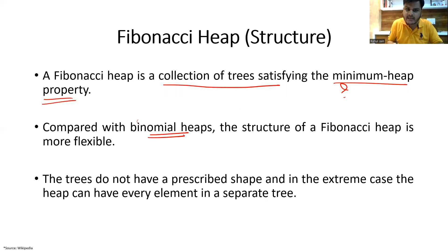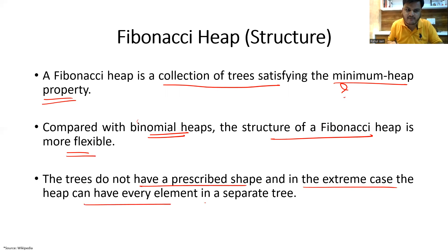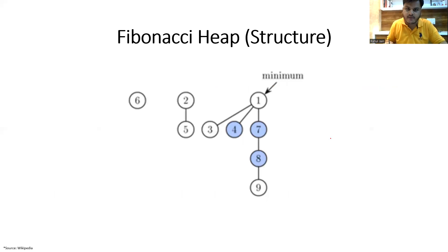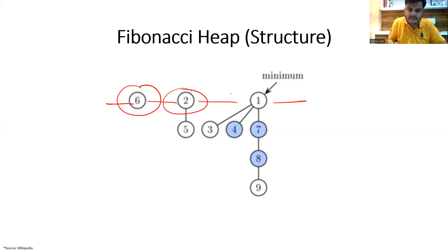Compared with binomial heaps, the structure of a Fibonacci heap is more flexible. The trees do not have a prescribed shape, and in the extreme case, the heap can have every element in a separate tree. You can assume it like a Fibonacci structure where all trees are connected — this is a tree, this is another tree, this is another tree — connected in a fashion. This is called a Fibonacci heap.